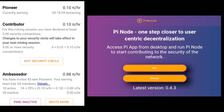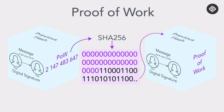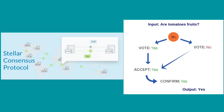PI Network doesn't require a high-end computer to host a node as a pioneer because it doesn't use the concept of proof of work. It uses the Stellar Consensus Protocol and the Federated Byzantine Agreement for its blockchain technology.